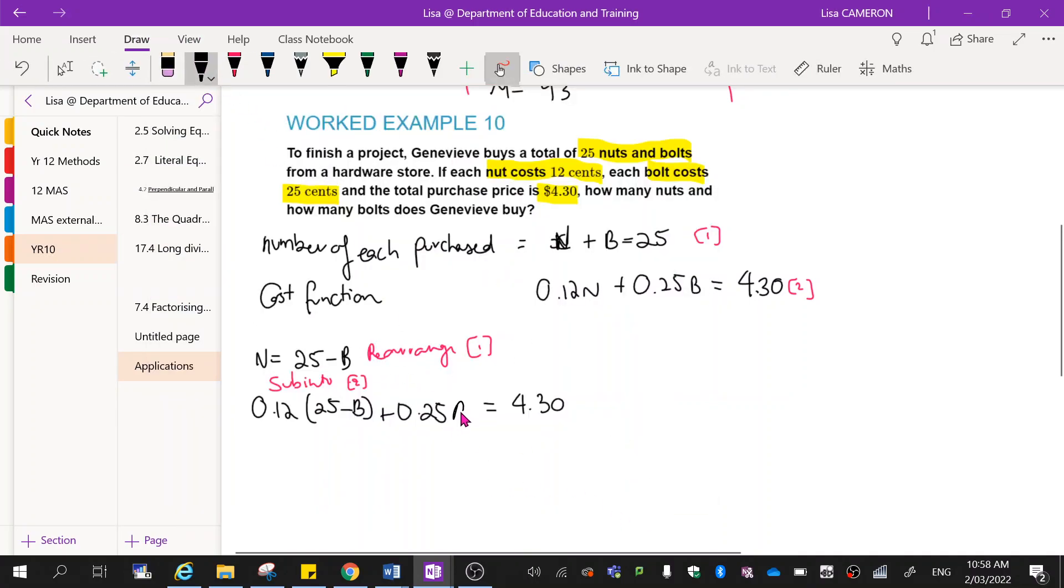Okay, so all I have to do now is expand. When I expand this, I'll have 0.12 times 25, which is going to give me 3 minus 0.12b plus 0.25b equals 4.30. Next, I'm going to group my like terms, which is these two. And I'm going to move that 3 to the other side. Remember, like I said, if you are making mistakes, it's with that.